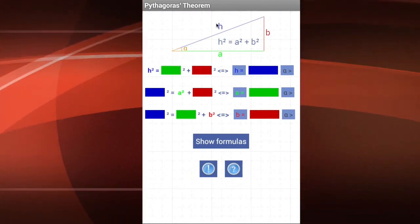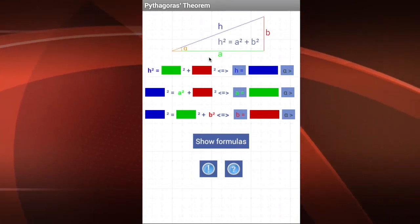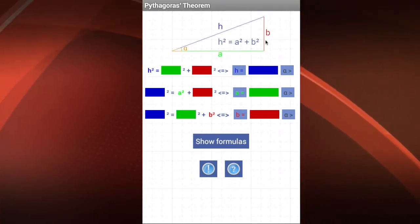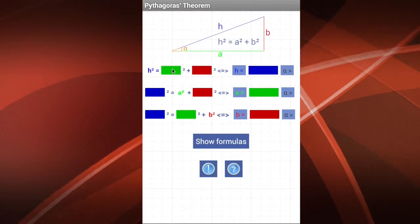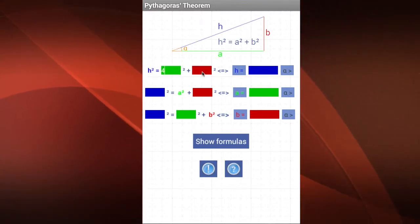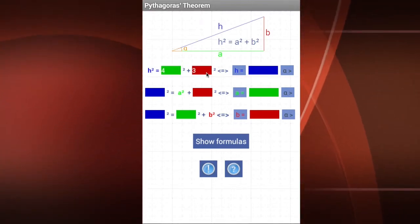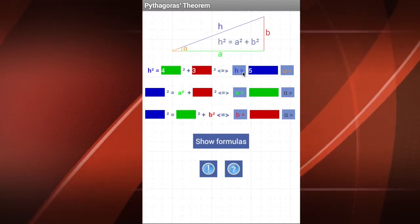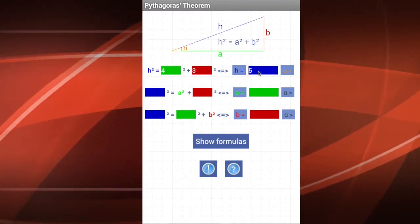For instance, I want to know the value of the hypotenuse, and I know both values of A and B. Let's say that A is 4 and B is 3. So if we click here, we get the value of the hypotenuse, which is 5. Pretty easy.